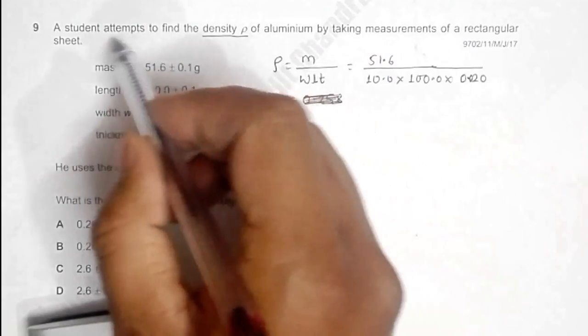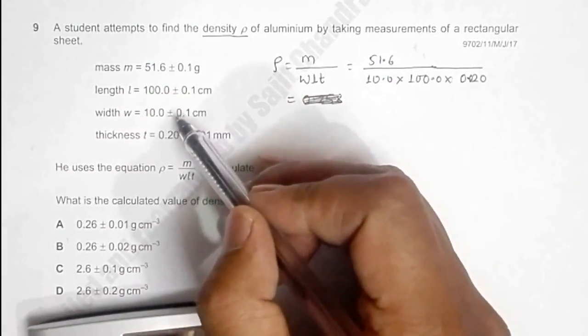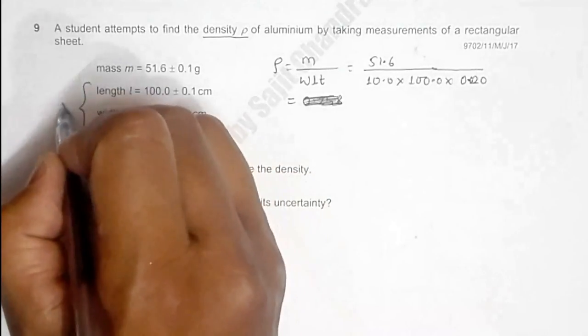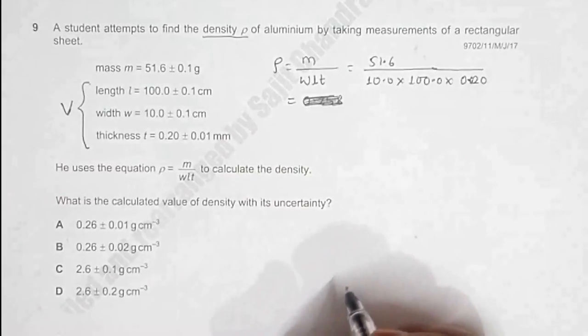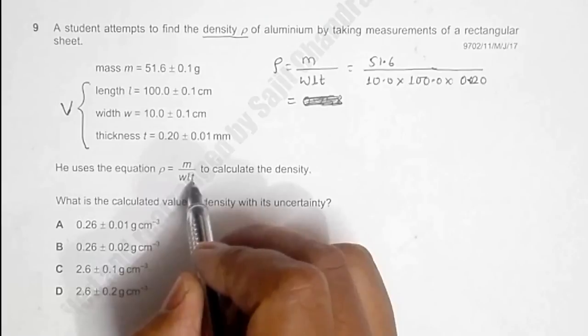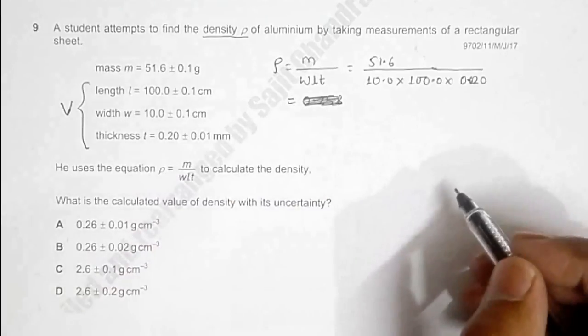The different dimensions are given: mass, length, width, and thickness. These three measurements are useful for calculating volume. The density is given as ρ = M/(WLT), where WLT is the volume. So density equals mass divided by volume.